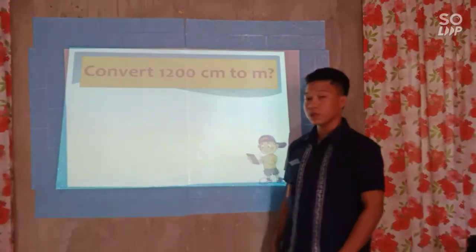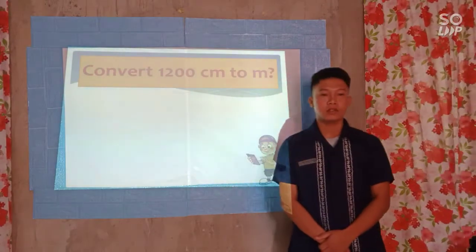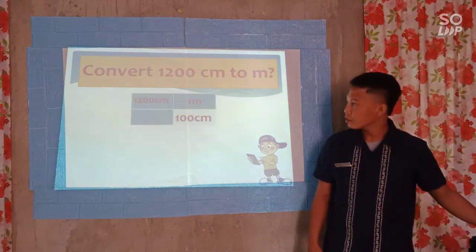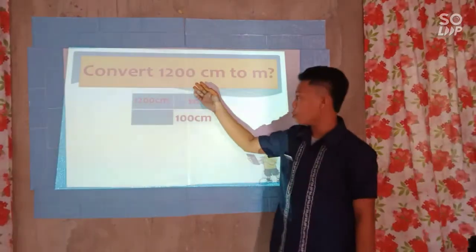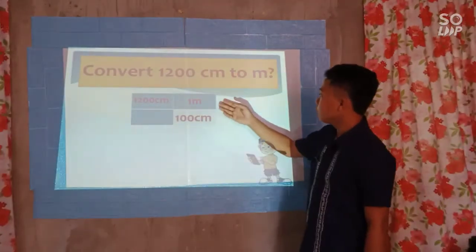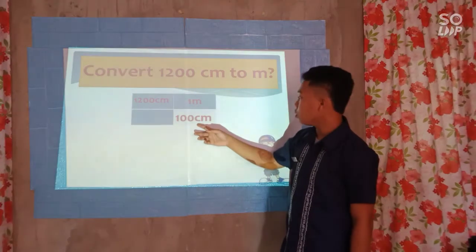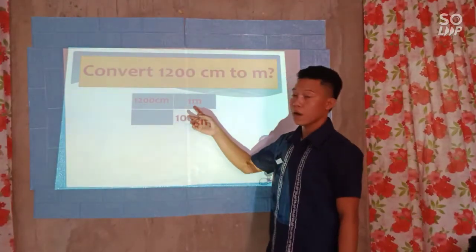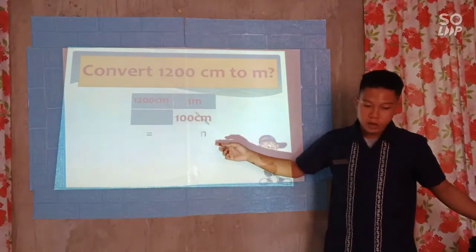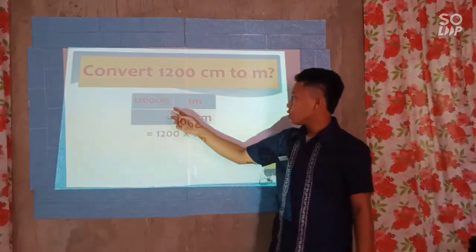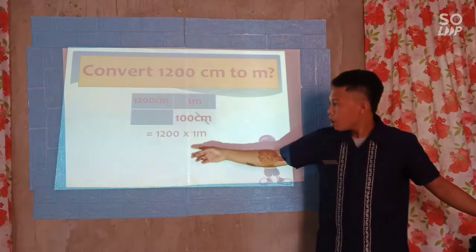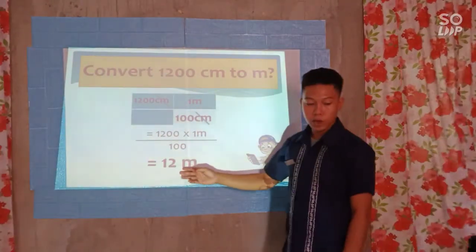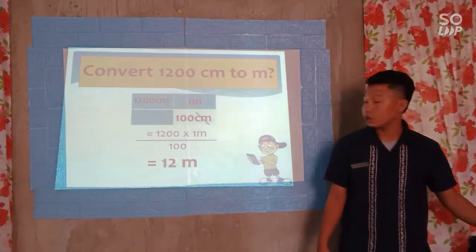Are you ready? Number one: convert 1,000 centimeters to meters. Group one, show your answer. Let's check. Our given is 1,200 centimeters. 1 meter is equivalent to 100 centimeters. Since we are finding meters, 1,200 centimeters times 1 meter over 100 centimeters. 1,200 centimeters times 1 meter is equal to 12 meters. Group one, that's the correct answer.